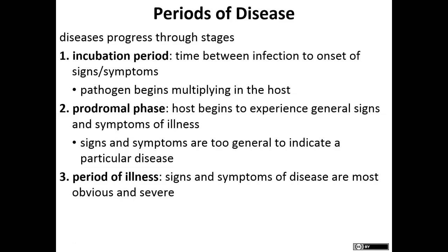The prodromal phase is when the individual starts feeling early signs of illness — they might feel lethargic, get a slight fever, or become a little pale — but they can still do the majority of their normal daily activities. The period of illness is when the disease is obvious and severe. The individual is not able to perform their normal duties; they need to rest, and may have fever or shortness of breath.